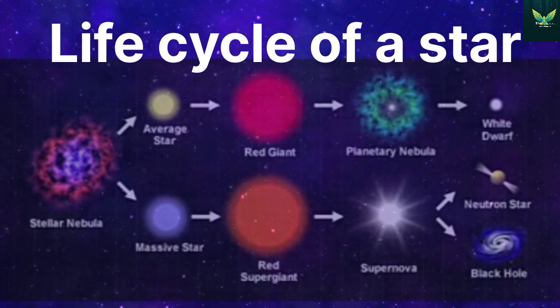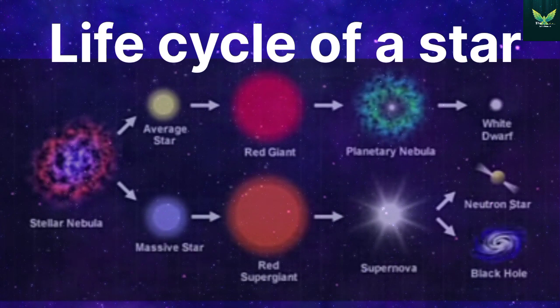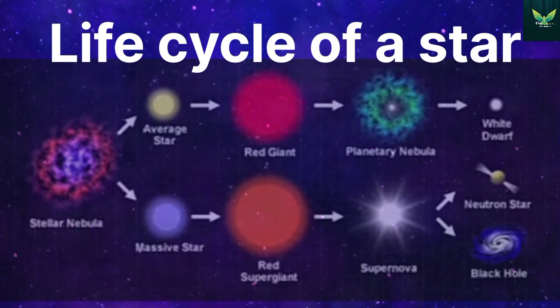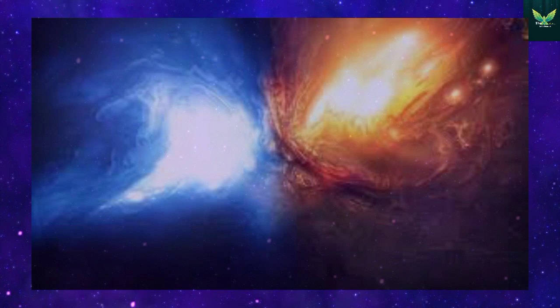But if it was a huge star with a lot of mass, when it runs out of fuel, it cools down and turns into a red supergiant. And then the supergiant bursts and turns into a supernova. After this, a tiny core remains. If the core is tiny, it is called a neutron star. But anything bigger than that, we call it a black hole.